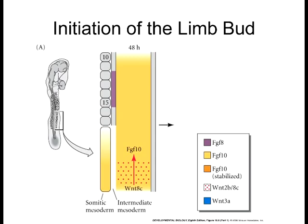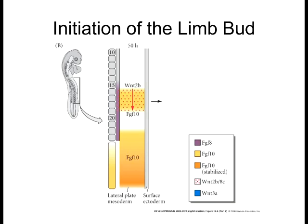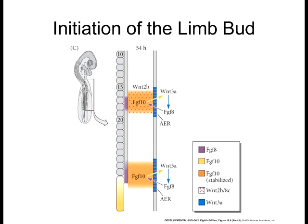Let's look at some of the inductive signals — the paracrine factors responsible for limb bud formation. FGF10 is one of the genes necessary in the formation of the limb bud. Typically it's expressed all the way through the mesoderm, but Wnt signaling causes it to stabilize at very discrete regions. So you get a restricted area where FGF10 is being expressed, and only in those areas does the limb bud start to form. That's why you don't get limb buds forming all the way down the axis of the embryo — certain factors restrict which lateral plate mesoderm will express FGF10.